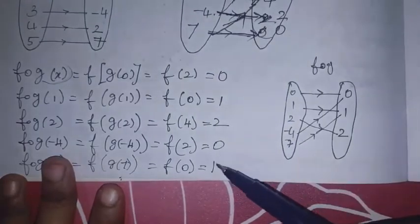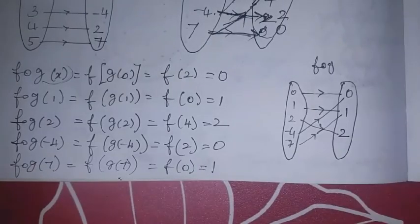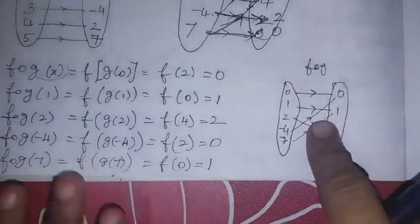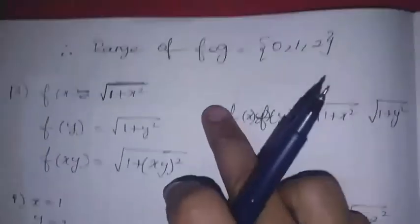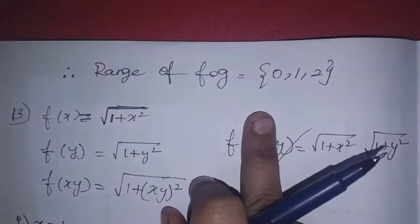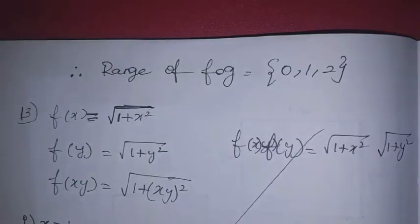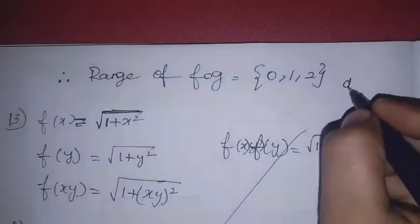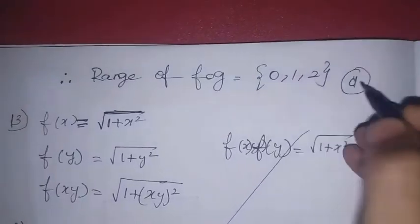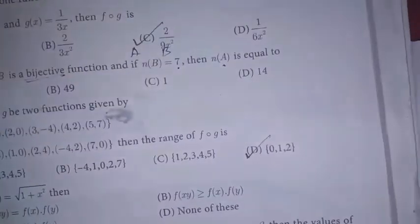The values 0, 1, 2 are repeated. So range of f∘g = {0, 1, 2}. Option D is the correct answer.